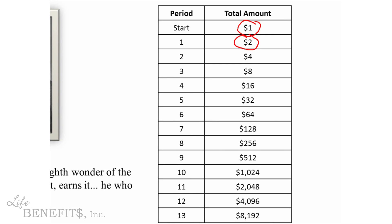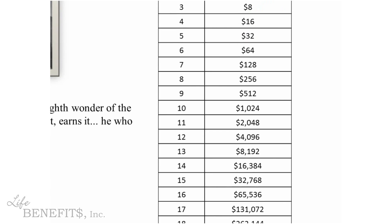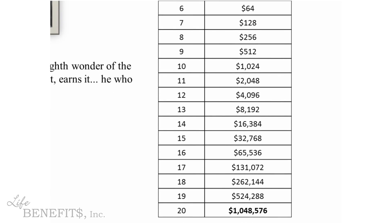Doubles again at 100% compound interest — at the end of two periods it's now four dollars. Repeat this process 20 times and you'll have $1,048,576. That's the power of compounding interest.